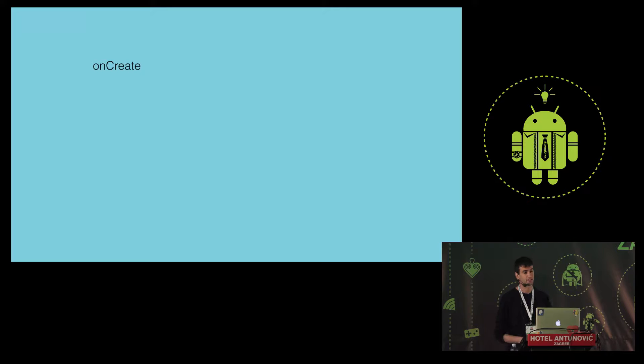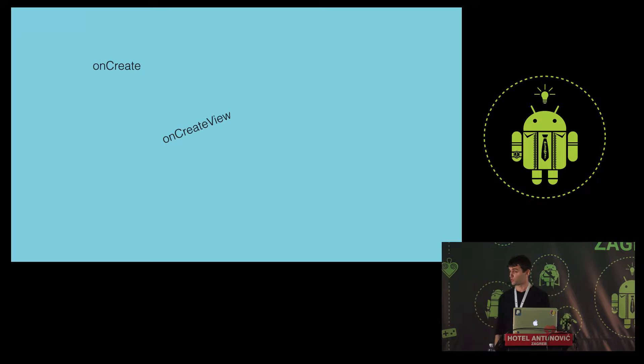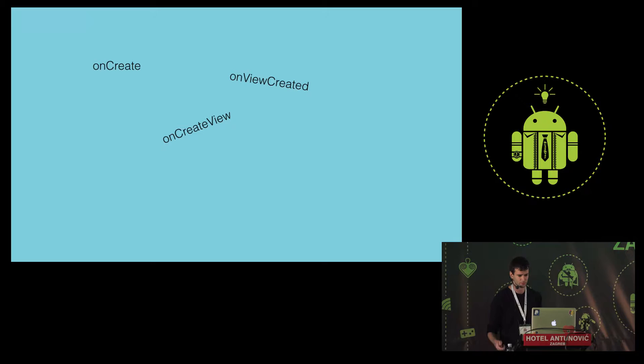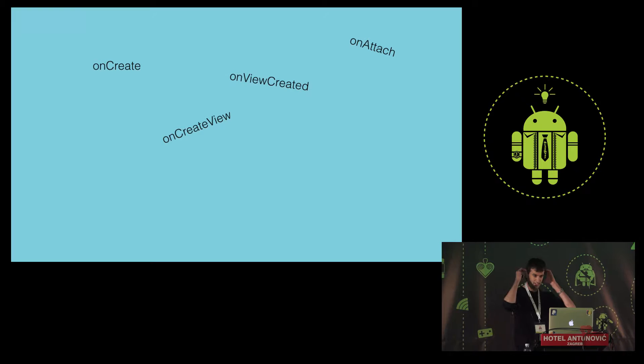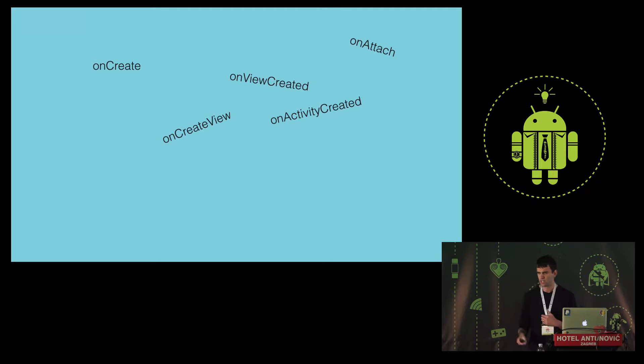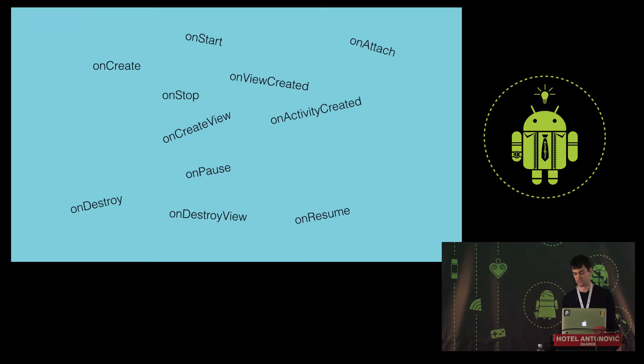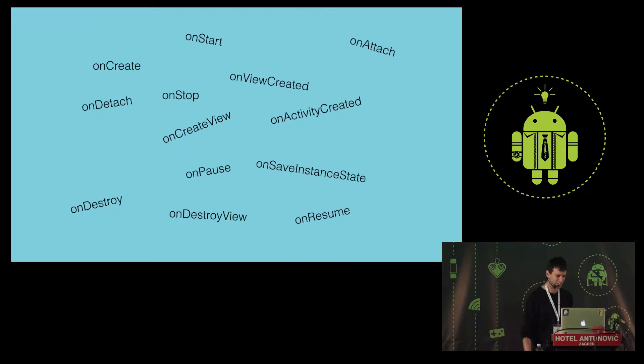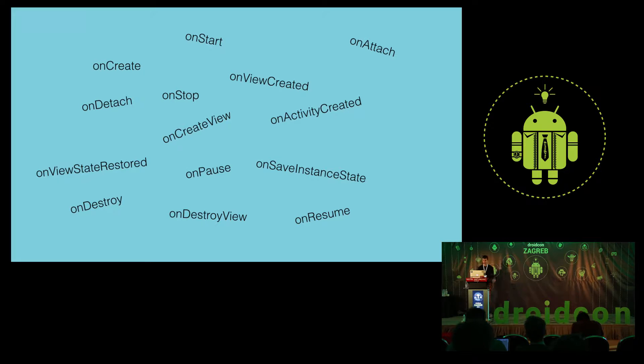Fragment lifecycle — it's really quite simple. You have onCreate called when the fragment is created, onCreateView when the fragment's view gets created, onViewCreated which is not the same as onCreateView, onAttach when the activity instance is attached to the fragment, onActivityCreated, onStart, Resume, Pause, Stop, DestroyView, Destroy, Detach — let's not forget onSaveInstanceState and ViewStateRestored. Really quite simple — I'm not sure what all the fuss is about.